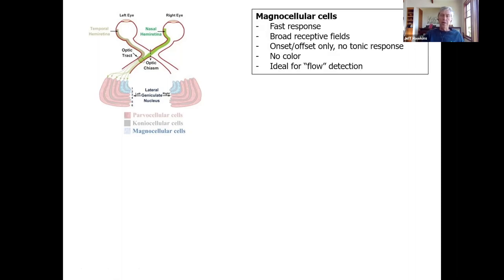Magnocellular cells have very fast response, broad receptive fields, they're onset/offset only, no tonic response. They have no color representation. This is ideal for flow detection. This is exactly what you would want for flow detection - you're trying to detect transitions over a broad area with very fast response.